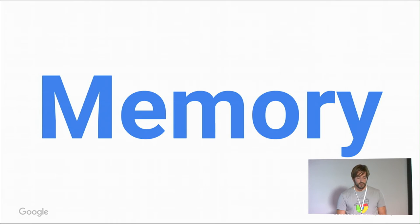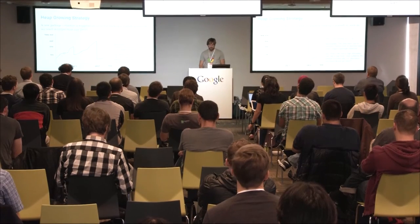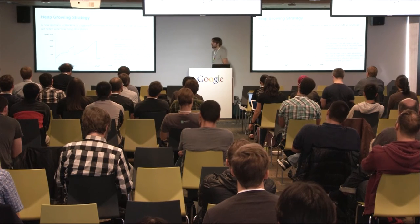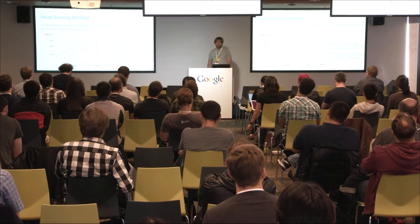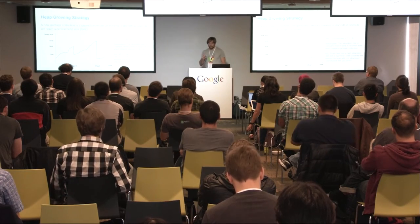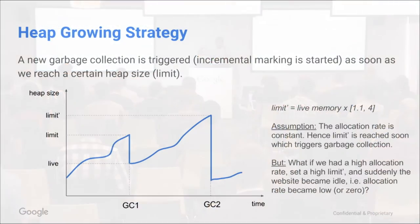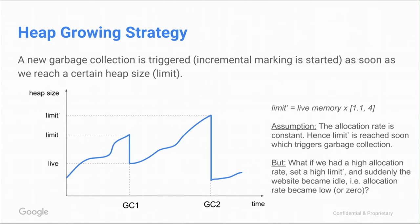Now let's look at memory. We also started taking advantage of idleness to reduce memory consumption. On the foreground thread, I mentioned the heap growing strategy where we calculate the limit from one GC to the next. The assumption is that the allocation rate is pretty constant over time. But this isn't really true on the web — you have a heavy page load phase where a lot of objects get allocated, then suddenly nothing happens anymore.